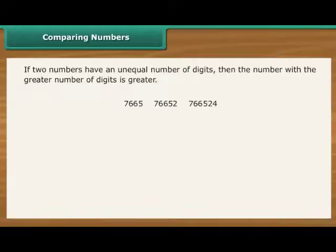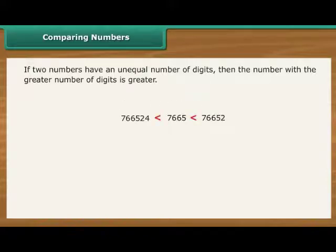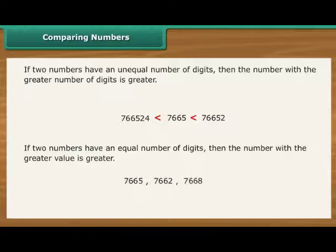If two numbers have an unequal number of digits, then the number with a greater number of digits is greater. If two numbers have an equal number of digits, then we need to compare numbers at each position.